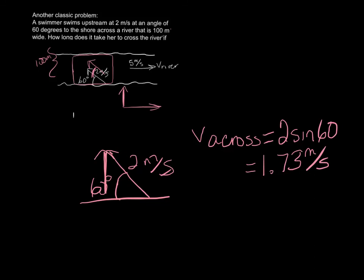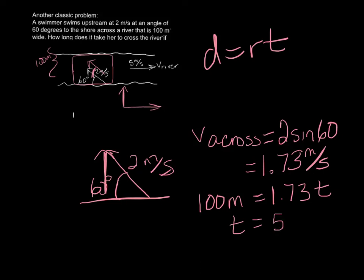And then, you know what? For all of these problems, distance equals rate times time. It still works. So our distance across the river, 100 meters, is equal to our rate, 1.73, times our time. So we find out our time is 57.7 seconds. That's pretty good, across the river.